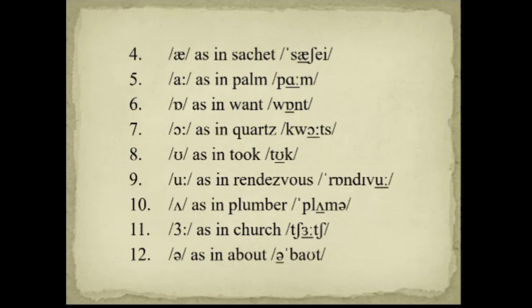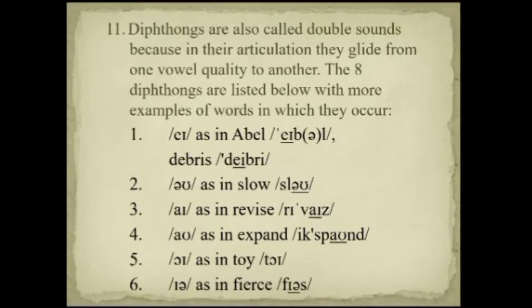Diphthongs are also called double sounds because in their articulation they glide from one vowel quality to another. The eight diphthongs are listed below with more examples of words in which they occur.